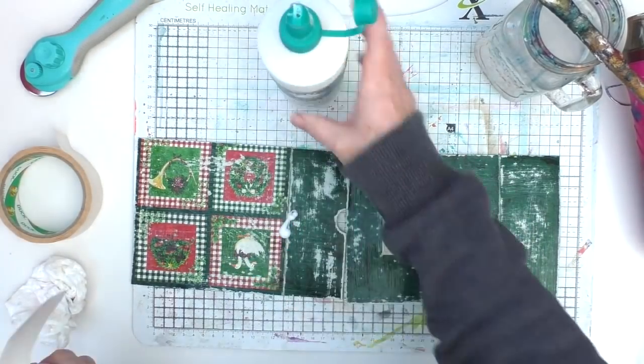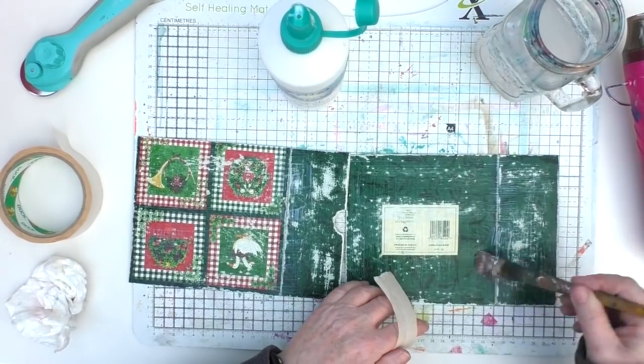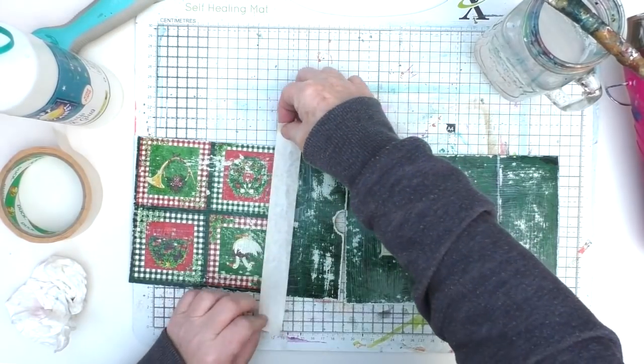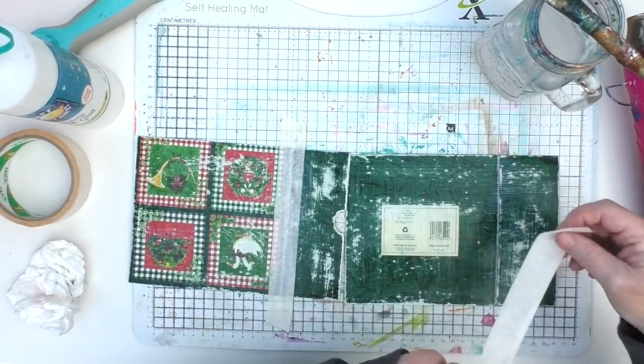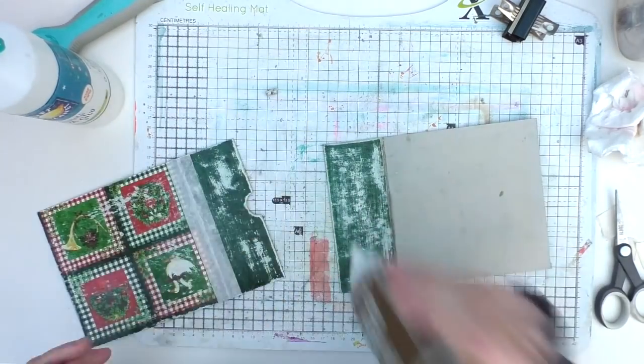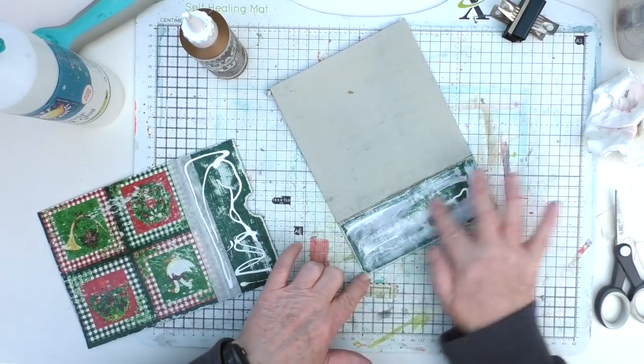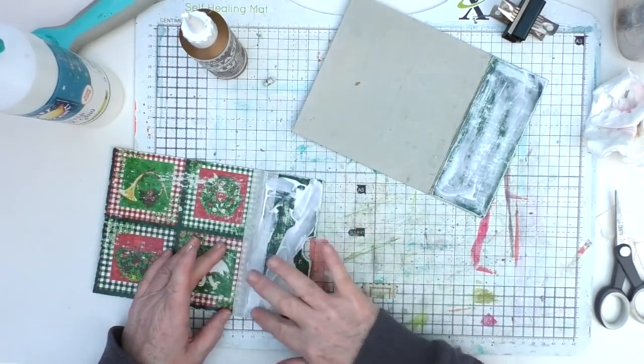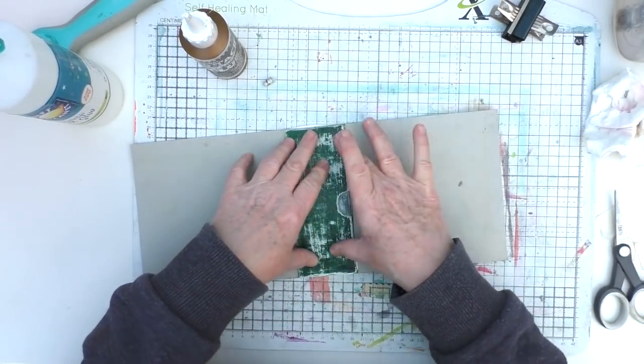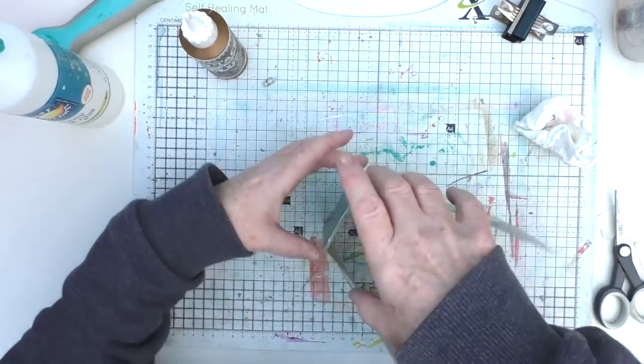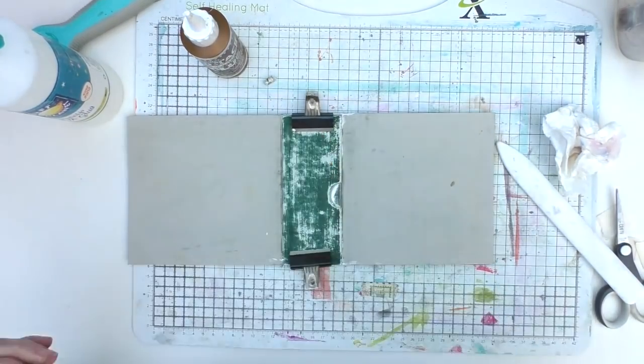My glue brush was a bit hard having sat unused for weeks. Just getting a nice even coat there. I left it to dry a little while but finished it off with the heat tool. I'm doing the exact same to the other side. Now I'm using masking tape and more glue to strengthen some of those fold pieces, giving added strength to those areas.